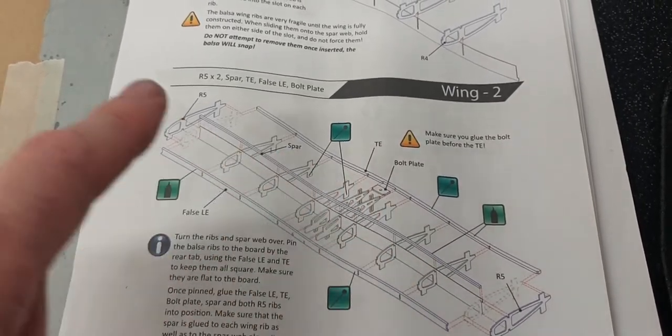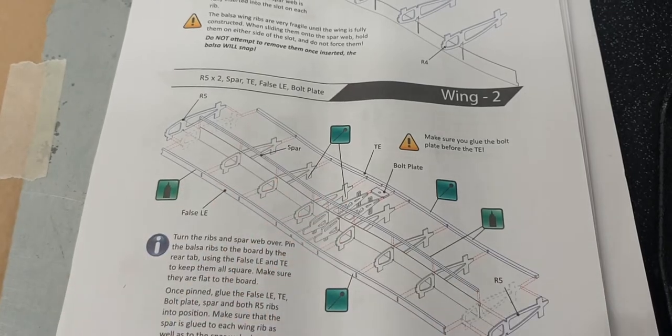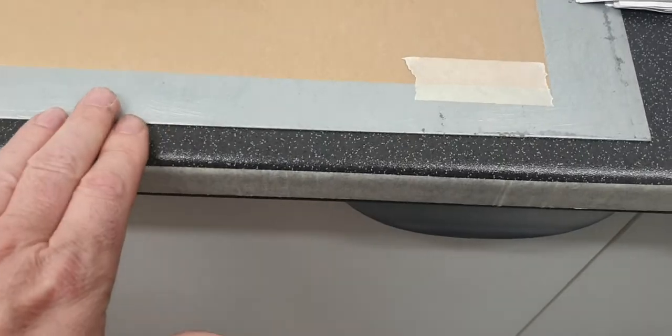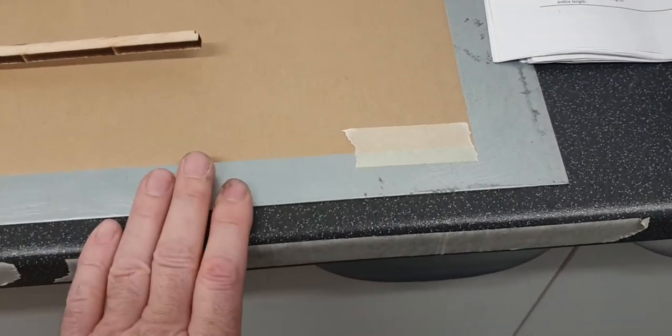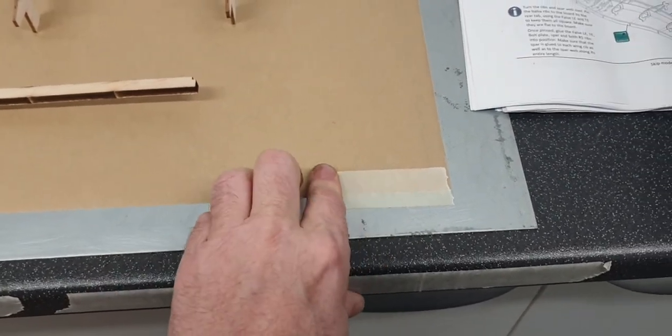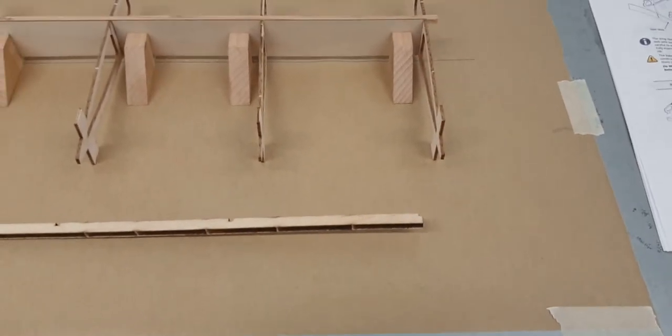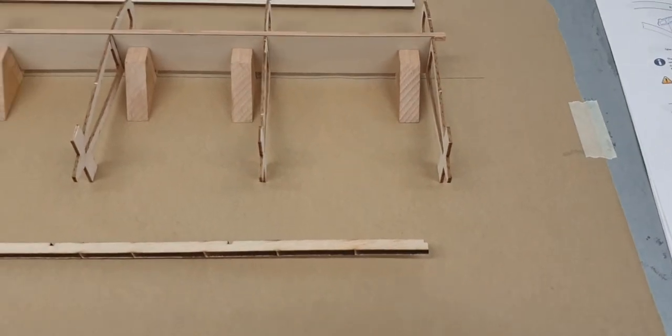And then moving on to part two of the wing, it shows you attaching the leading edge, the trailing edge, and the main spar that runs through. I'm using a metal magnetic building board which I found absolutely invaluable for this sort of work.